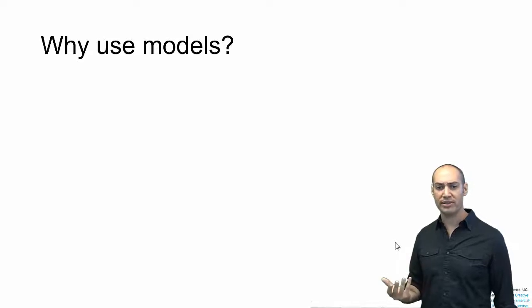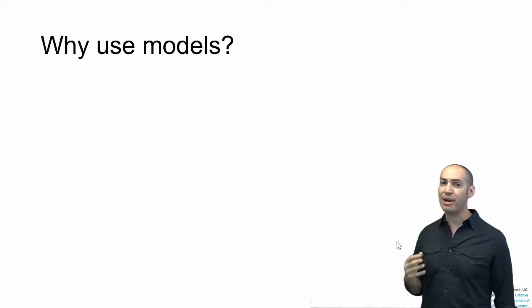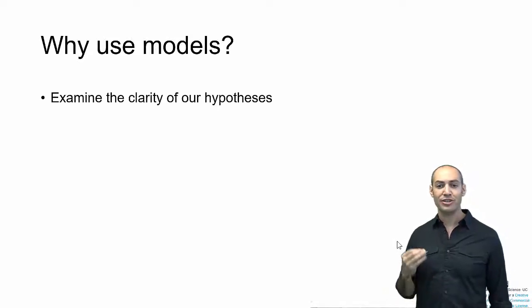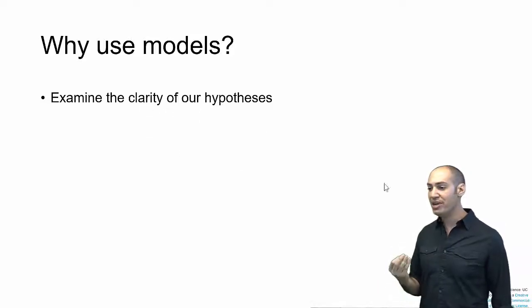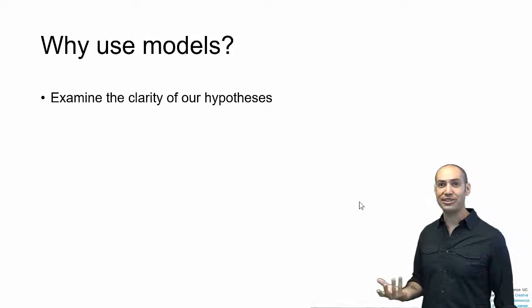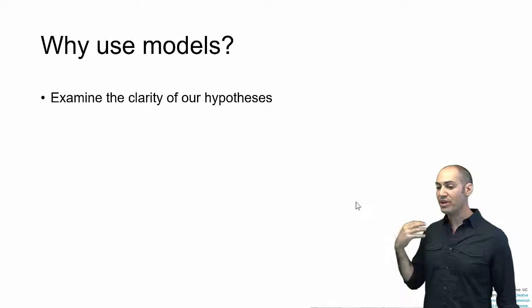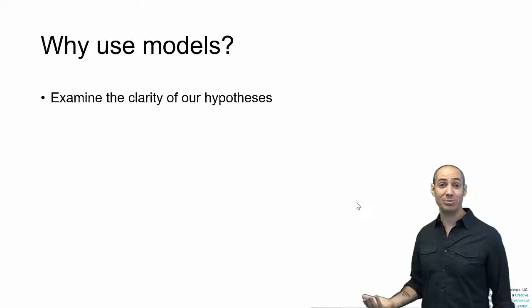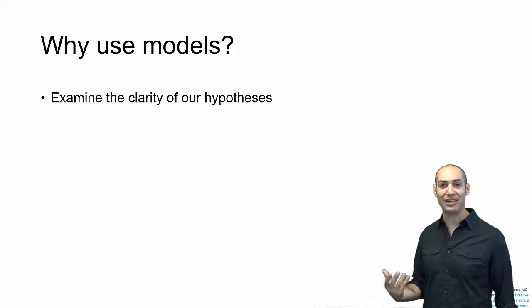So why do we use models like this? There are a bunch of reasons. One of them is to examine the clarity of our hypotheses to make sure that we actually understand what we're talking about, that our breakdown of a system is coherent. Sometimes we think we understand something, and then we have to explain it very specifically, and we realize there are a bunch of things that we don't actually have worked out yet. So building a model helps us be clear about what we're talking about.